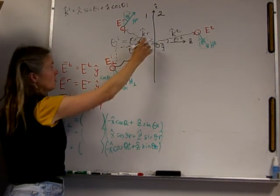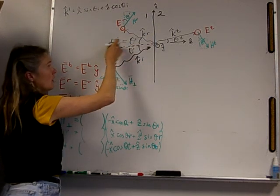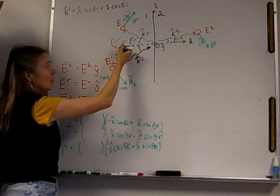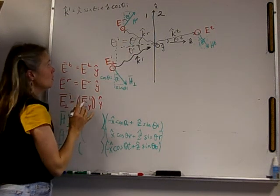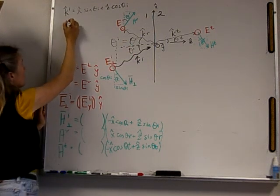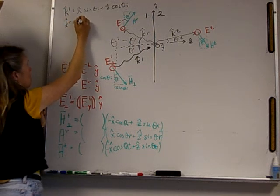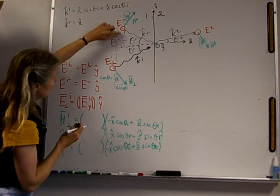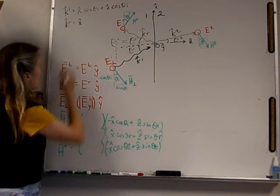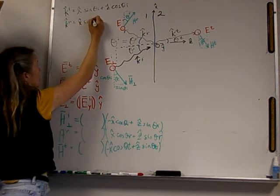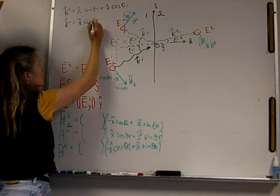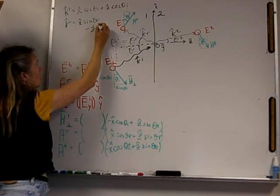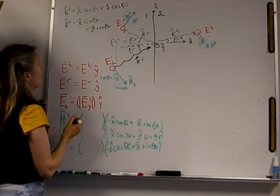Now let's look at the reflected field. The reflected field also has a Z component, but you can see that's negative. And it has an X component, which is also positive. So Kr is going to have a positive X component — that is sine of theta R — minus its Z term, cosine of theta R.